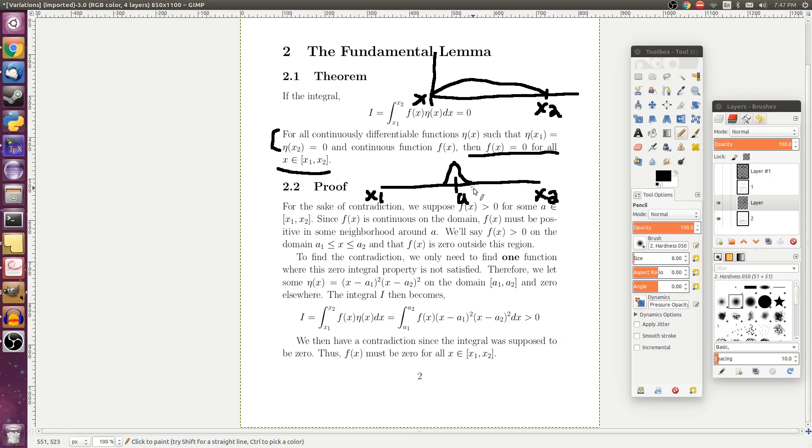f of x, and then we'll say that f of x is zero outside this region. Because we only really get to assume that it's positive at one point. So by it being continuous, we know it would have to be positive in some region around that point. Then we'll label this region as a1 and a2.